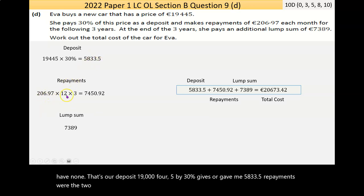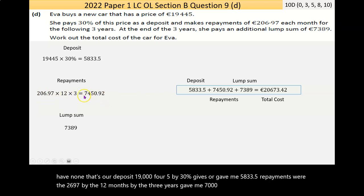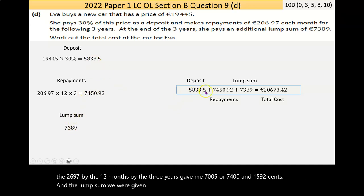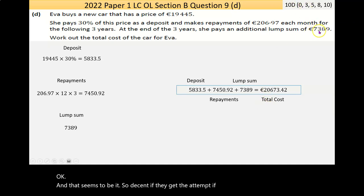I think all we have to do is do those calculations. That's her deposit, 19,445 by 30%, gave me 5,833.5. Repayments were the 206.97 by the 12 months, by the three years, gave me 7,450.92 cents. And then the lump sum we were given, just have to add those three figures together. And that's what she paid for the car.